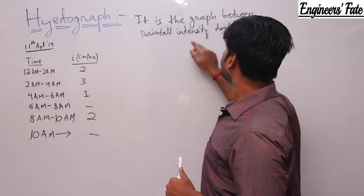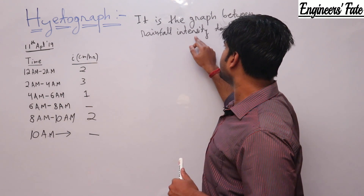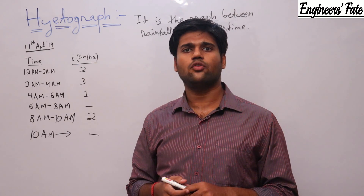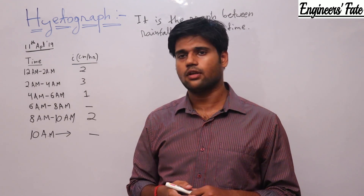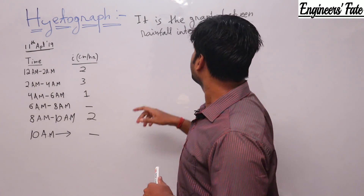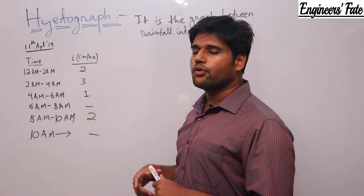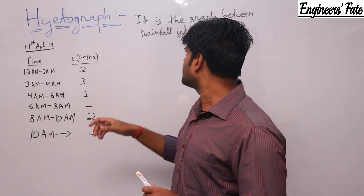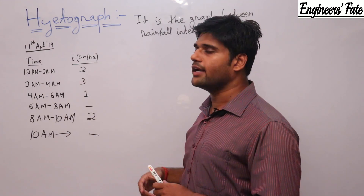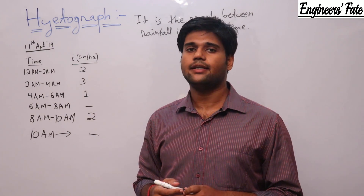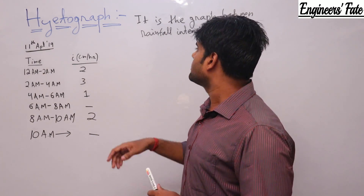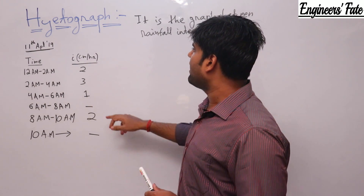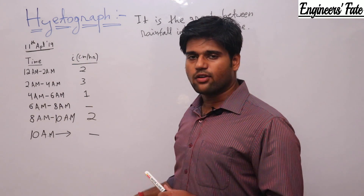In the previous class I told you that rainfall intensity is nothing but depth of precipitation divided by duration of rainfall. So remember: I = P/T, where I is intensity.